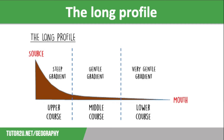The long profile of a river shows how the gradient changes as a river flows from source to mouth. The gradient is steep in the upper course, more gentle in the middle course, and almost flat in the lower course.